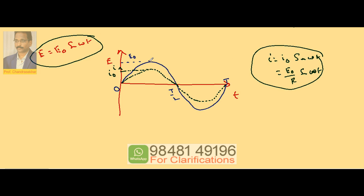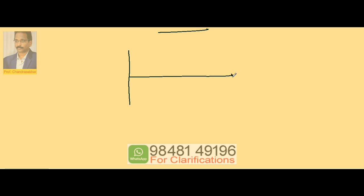Observing these two equations, we can say whenever EMF becomes maximum, current is also maximum; whenever EMF is zero, current is zero. They are said to be in phase. When a pure resistor is connected to an AC source, EMF and current are in phase. In the phasor diagram, EMF and current point in the same direction.